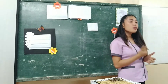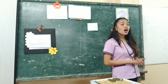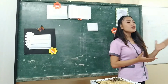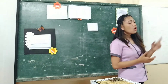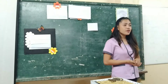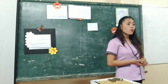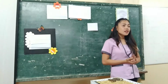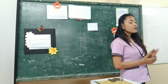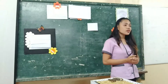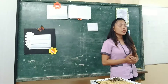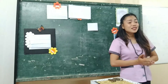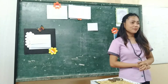Before we proceed to our topic, here are our objectives for today. At the end of the lesson, you should be able to: first, classify whether the equation is in standard form or slope-intercept form; second, find the slope of a line given the linear equation; and third, demonstrate accuracy in finding the slope of a linear equation. I hope that we can meet all these objectives at the end of the lesson.